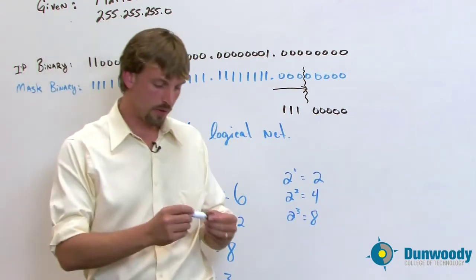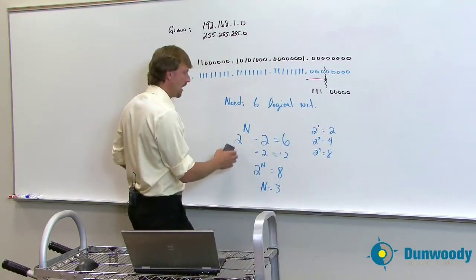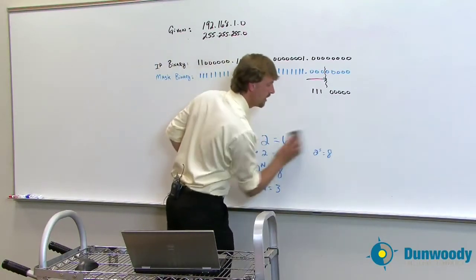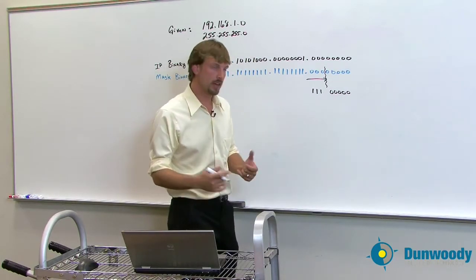So again, this is where that grid that I was telling you about comes in handy. If you have a reference of all of the subnet mask possibilities, and the only possibilities that there can be are these...